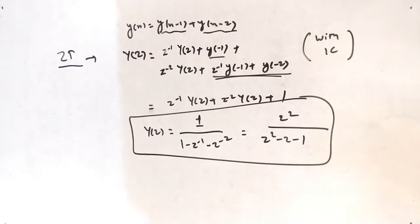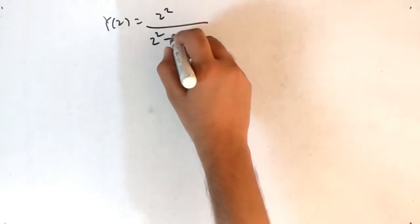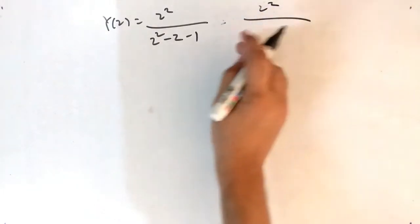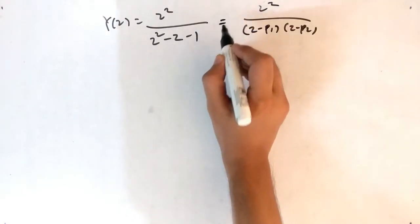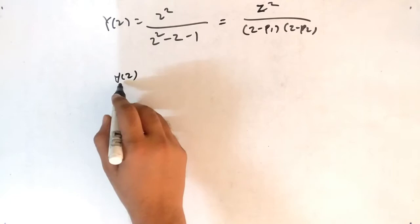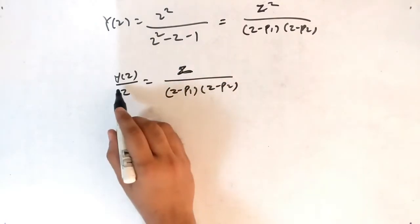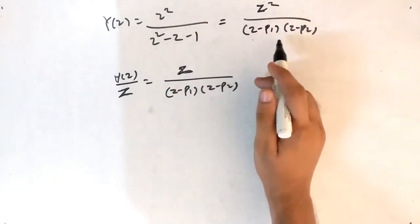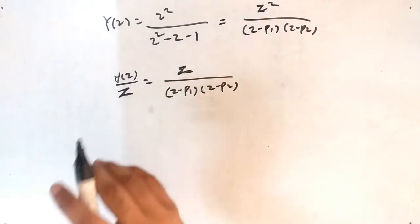Now apply partial fractions. Our equation is Y(Z) = Z² / (Z² - Z - 1). First, factorize the denominator to get (Z - P1)(Z - P2). Second, shift one Z to the left-hand side: Y(Z)/Z = Z / [(Z - P1)(Z - P2)]. This sets up the partial fraction decomposition.